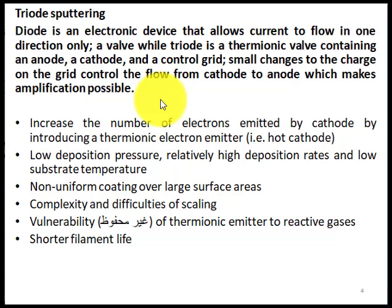For example, the cathode is negatively charged, so electrons move from cathode to anode. In a diode device the electrons simply move from cathode to anode. In a triode device we use a control grid which has charges, so small changes in the charges of the control grid can increase or decrease the speed of electron movement from cathode to anode.